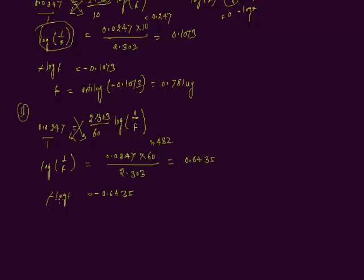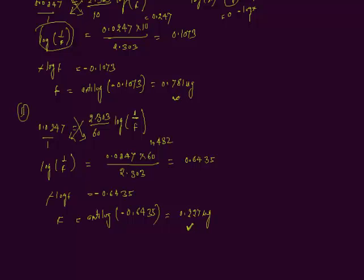Transferring log to the right side: f = antilog of -0.6435, which equals 0.227 micrograms. So after 60 years, 0.227 micrograms of strontium-90 remains. This is the final amount after 60 years, compared to 0.781 micrograms after 10 years.